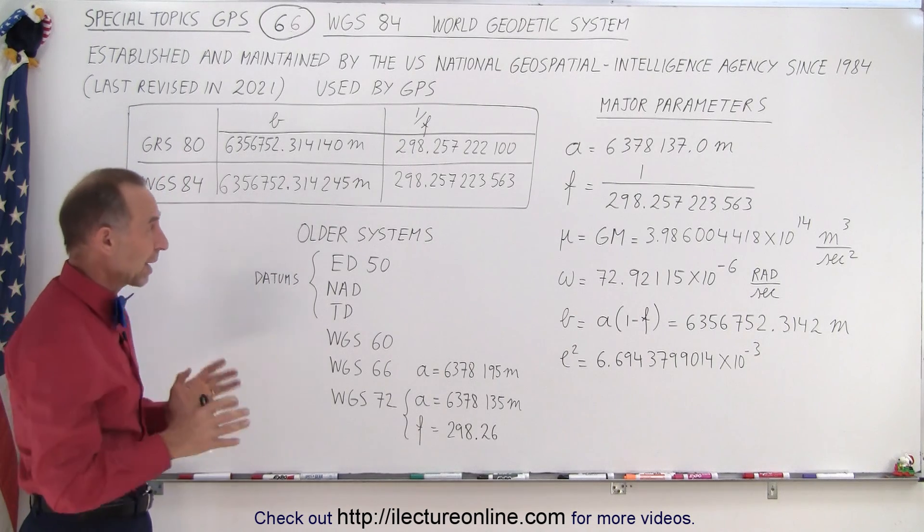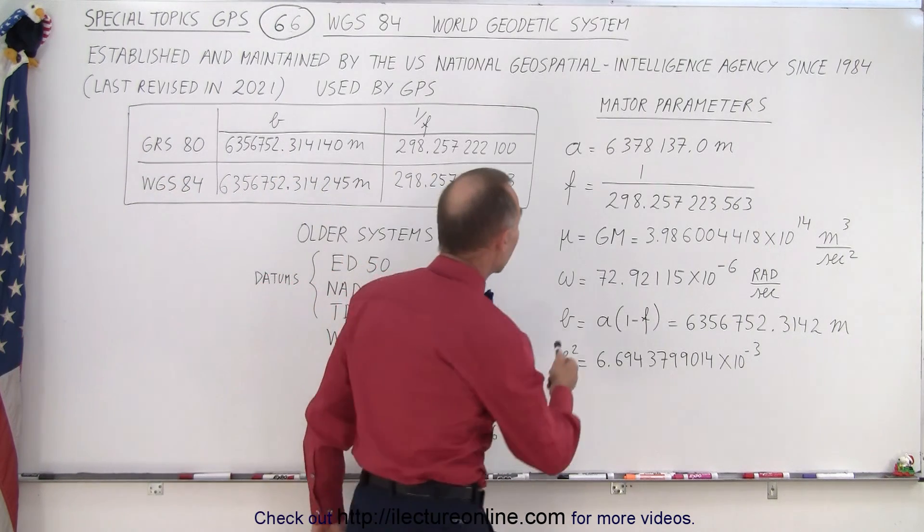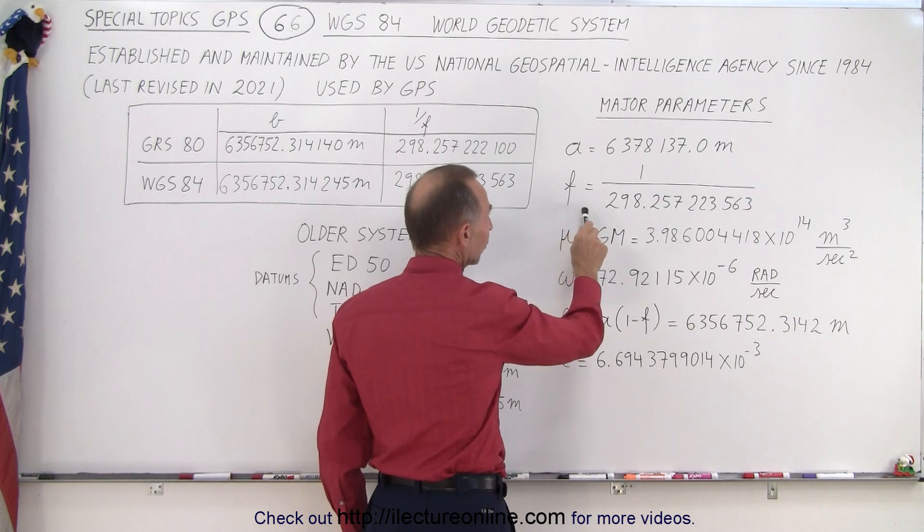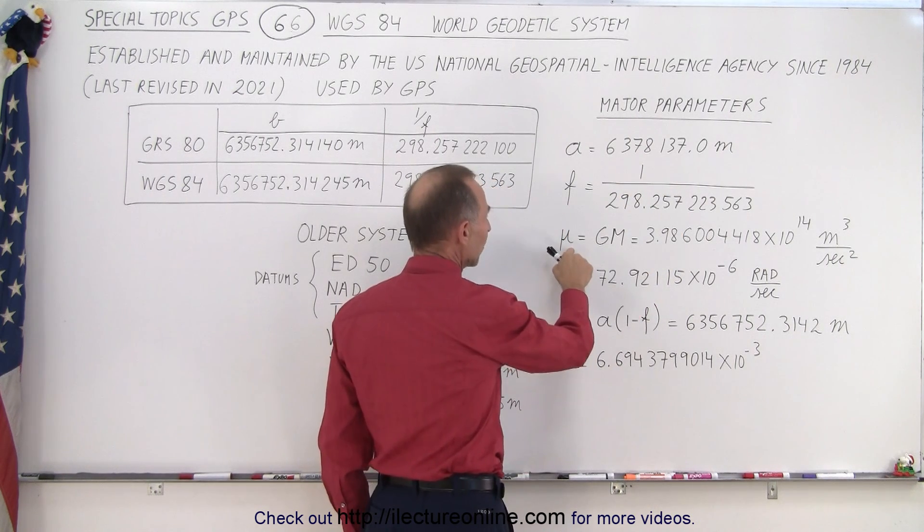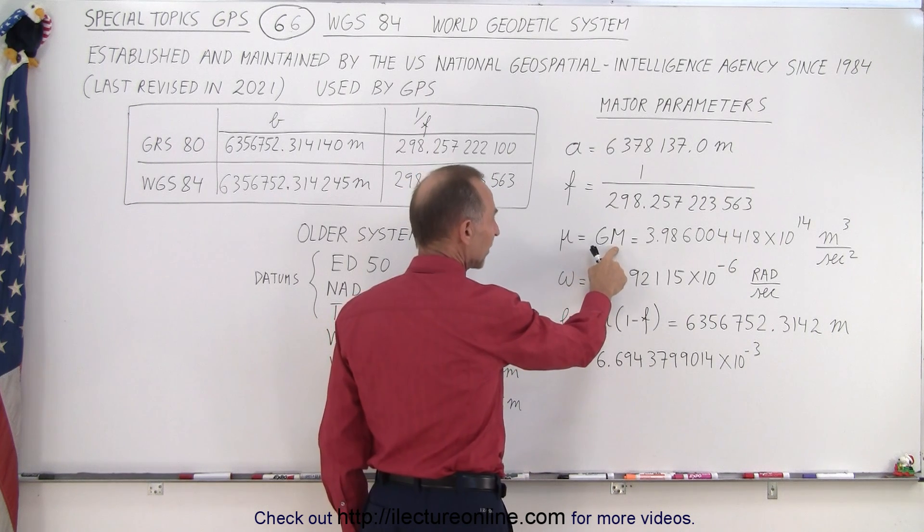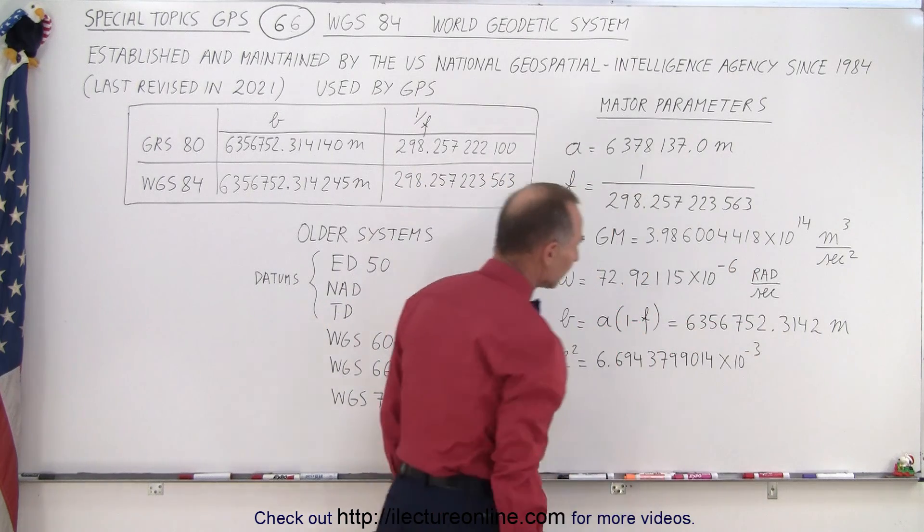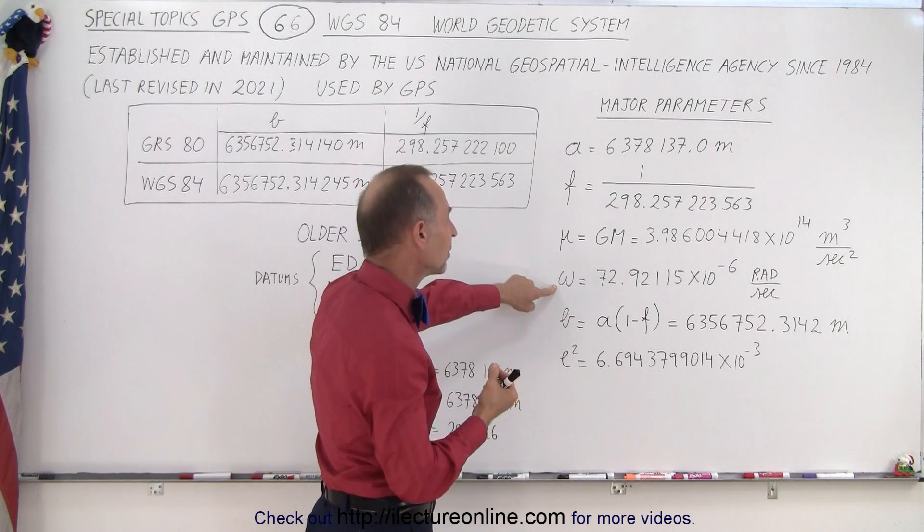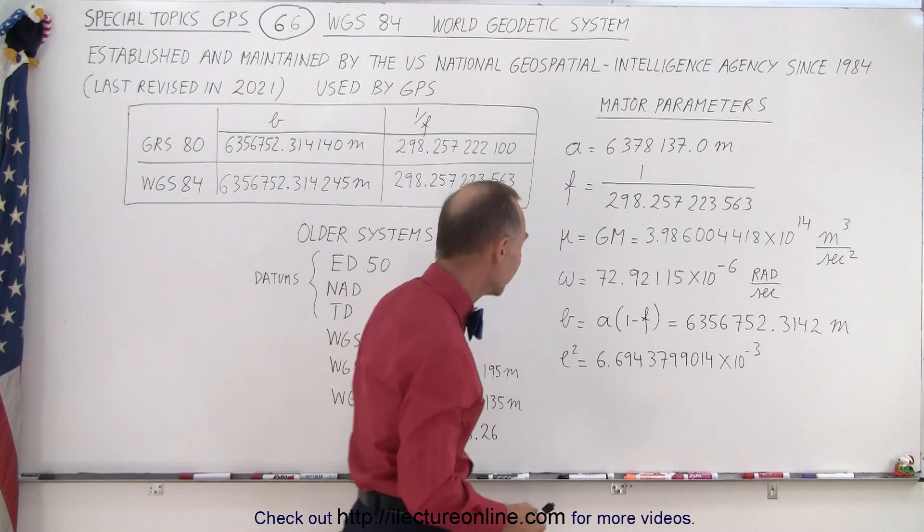So what are some of the major parameters that we're concerned with with GPS? We have the semi-major axis. We have the flattening curve which can be calculated very accurately. We have the Earth's gravitational term, which is the product of the gravitational constant and the mass of the Earth. And this is now established to a lot of decimal places. We have the angular rotational velocity of the Earth. That's 72.92 times 10 to the minus 6 radians per second.